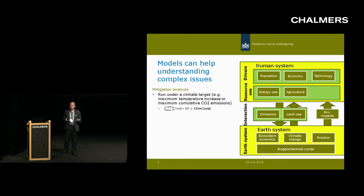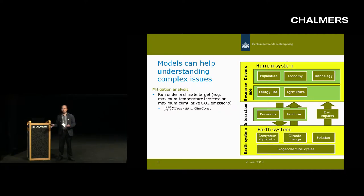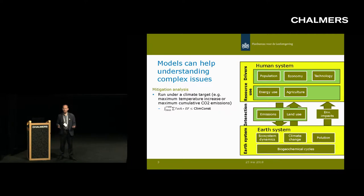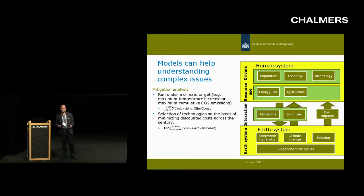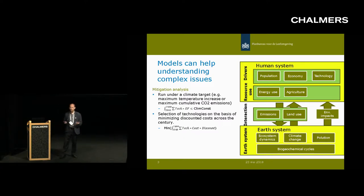Using these tools for mitigation analysis means we allow the model to choose certain technologies and have activities in both the energy system and the land-use system, and we put a climate constraint on these activities. These activities lead to emissions, and we simply sum across all different technologies. Over time, we have some kind of climate constraint — either a temperature target or a CO2 budget. Typically, these models work on a cost optimization regime, so while we have the climate constraint, they also try to optimize and minimize cost.